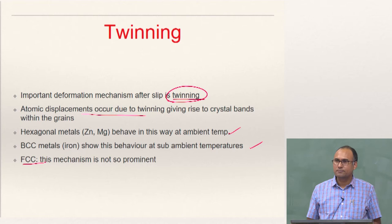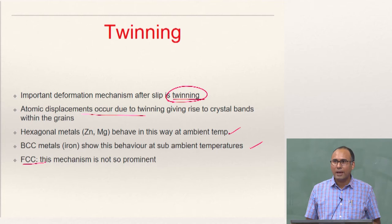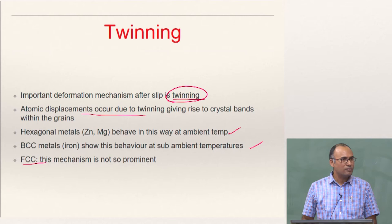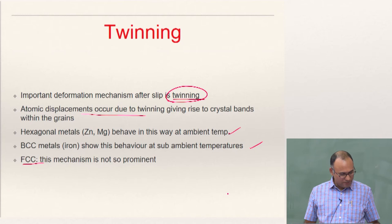FCC materials primarily deform due to slip, whereas in HCP and BCC you can observe some twinning happening. It is not that FCC materials will never show twinning — they may also show twinning — but it is not so prominent as in the case of HCP and BCC materials.